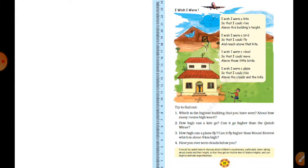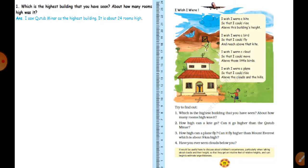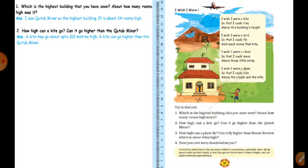Which is the highest building that you have seen? About how many rooms high was it? Qutub Minar is the highest building I have seen — it is about 24 rooms high. This is my judgment. If you have seen a historical place that is the highest building, write it down in your notebook. How high can a kite go? Can it go higher than Qutub Minar? A kite can go about up to 100 meters high, and a kite can go higher than Qutub Minar.